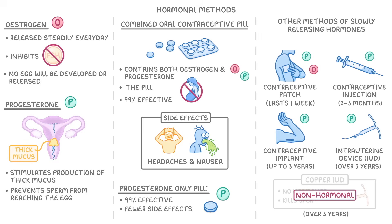So as you can see, there are loads of different types of hormonal contraceptives, and they all work in a pretty similar way. The big difference is how invasive the initial treatment is — for example, taking a pill versus having something implanted into your body — and how long they last, which varies from days to years.